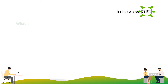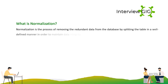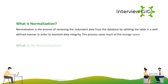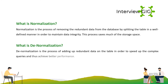Normalization is the process of removing redundant data from the database by splitting the table in a well-defined manner in order to maintain data integrity. This process saves much of the storage space. Denormalization is the process of adding redundant data to a table in order to speed up complex queries and achieve better performance.